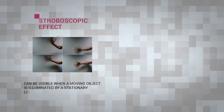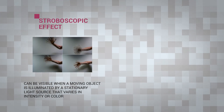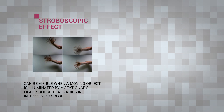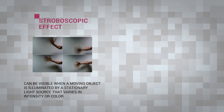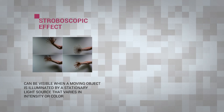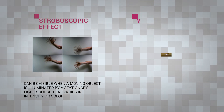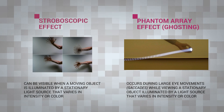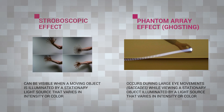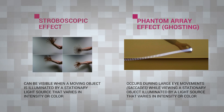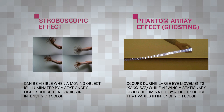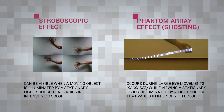The stroboscopic effect is another temporal light artifact, which gives the impression that an object is moving at a different rate to its actual speed. The phantom array effect, also known as ghosting, is another temporal light artifact, resulting in a ghosting trail of the object in the person's vision.